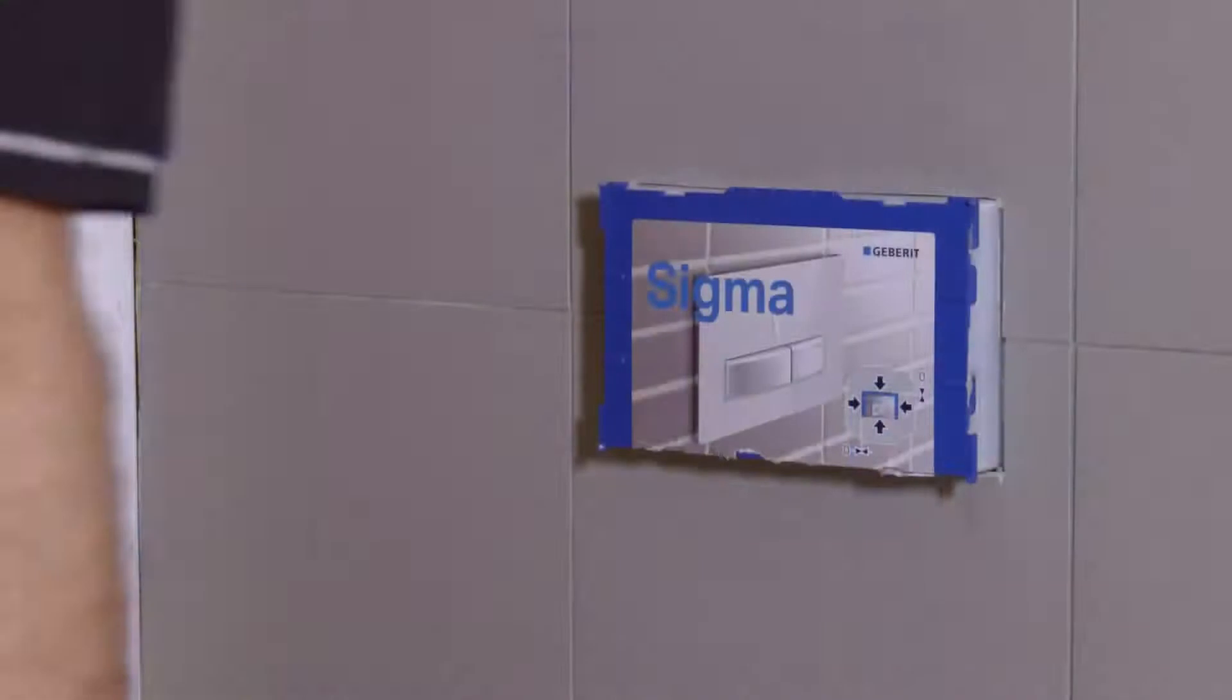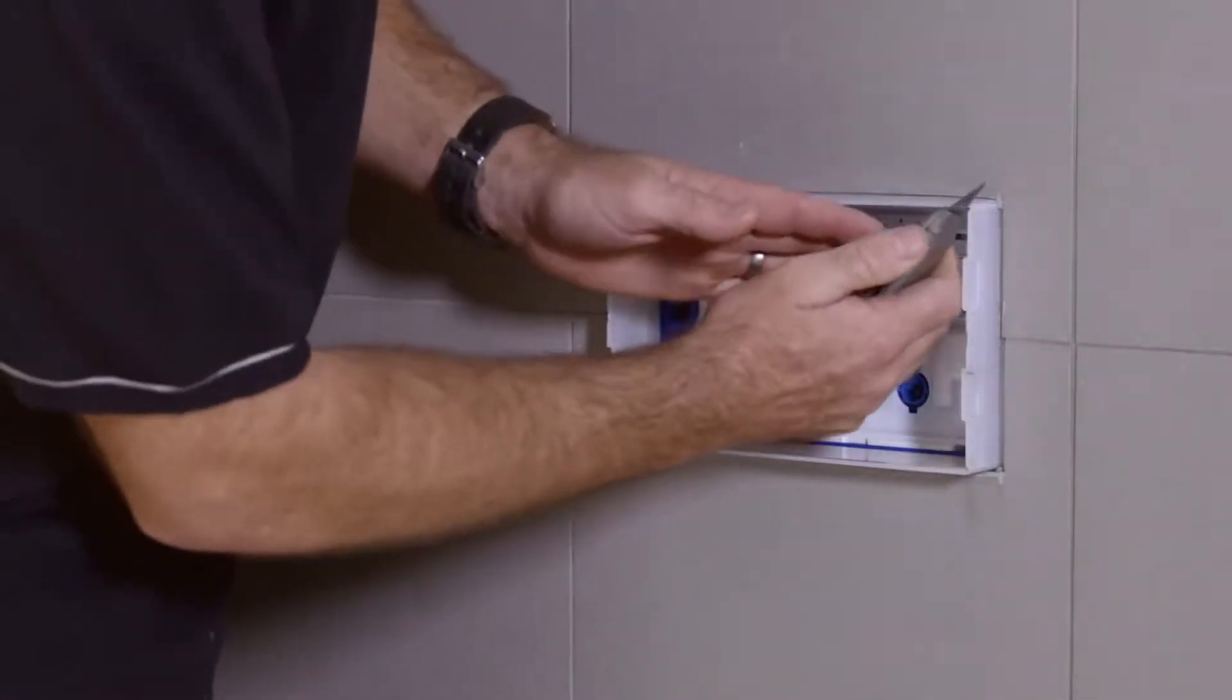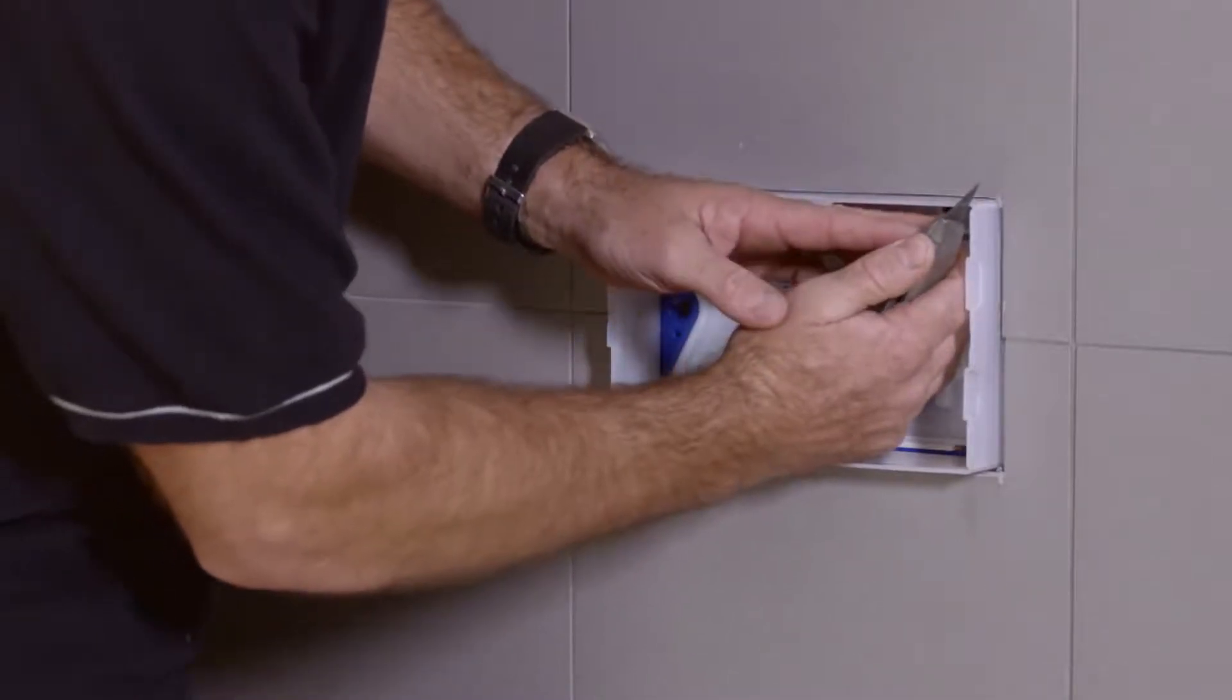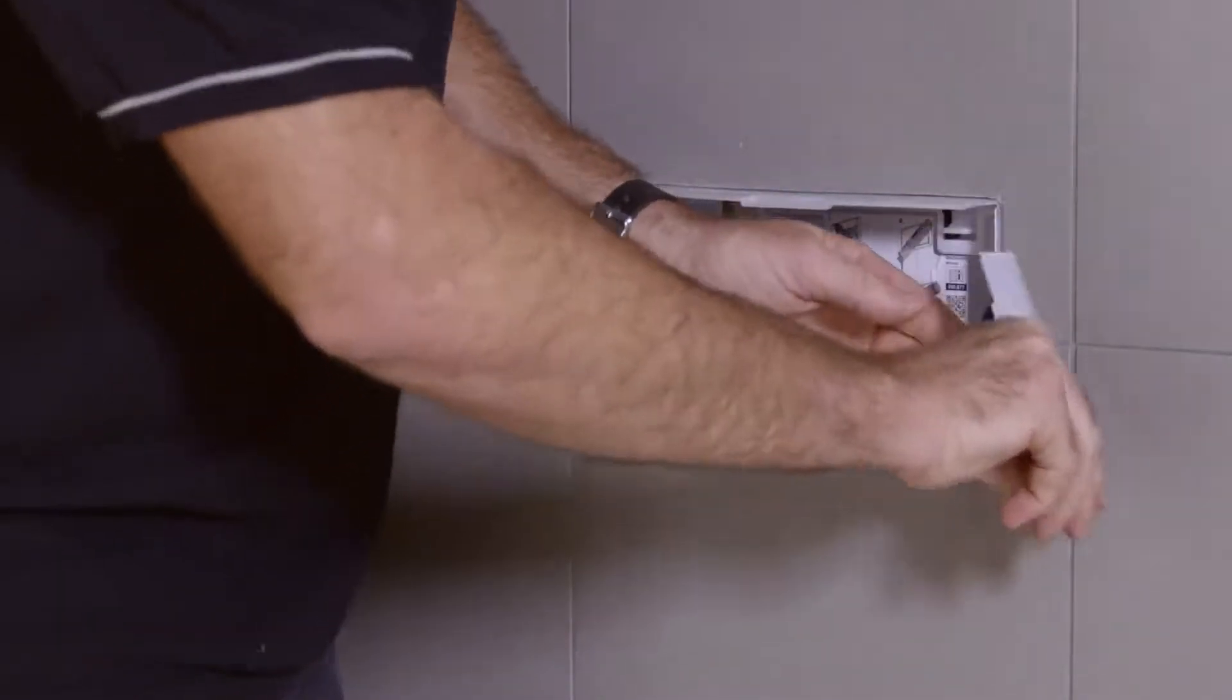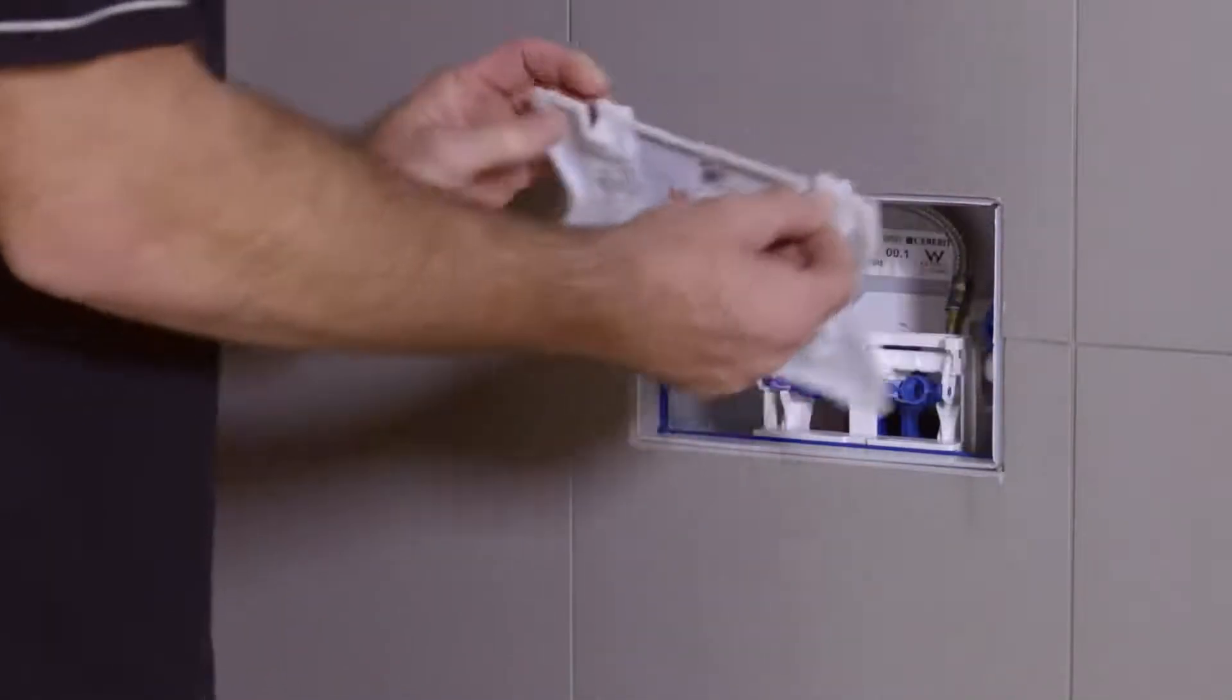To fit the buttons, remove the outer dust cover. Trim the installation duct flush with the tiles using a utility knife. Remove the inner cover and transmission block.